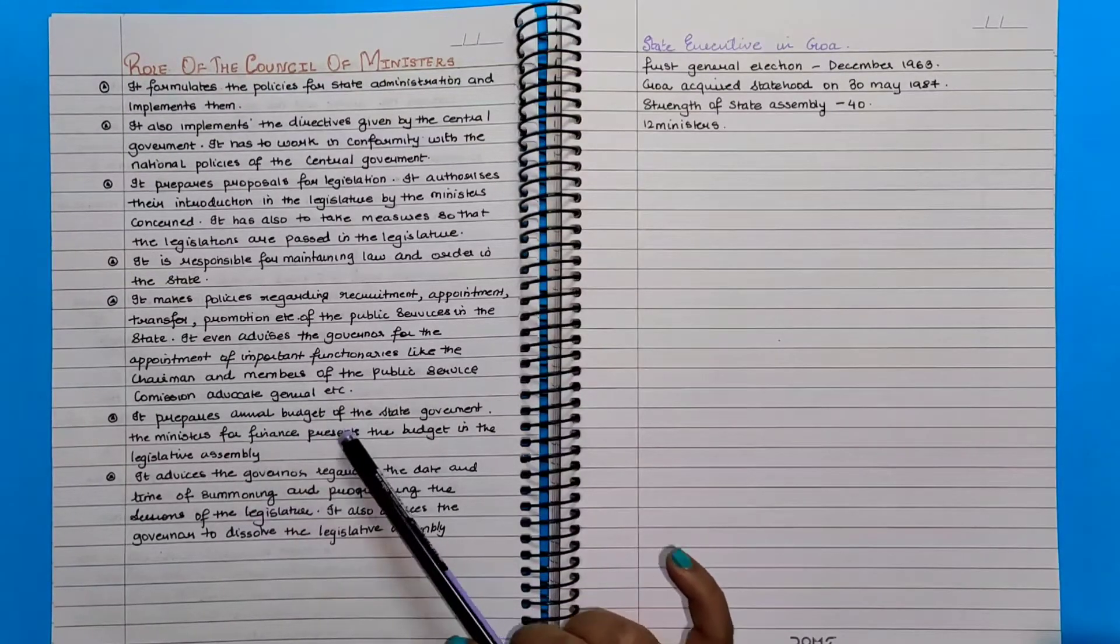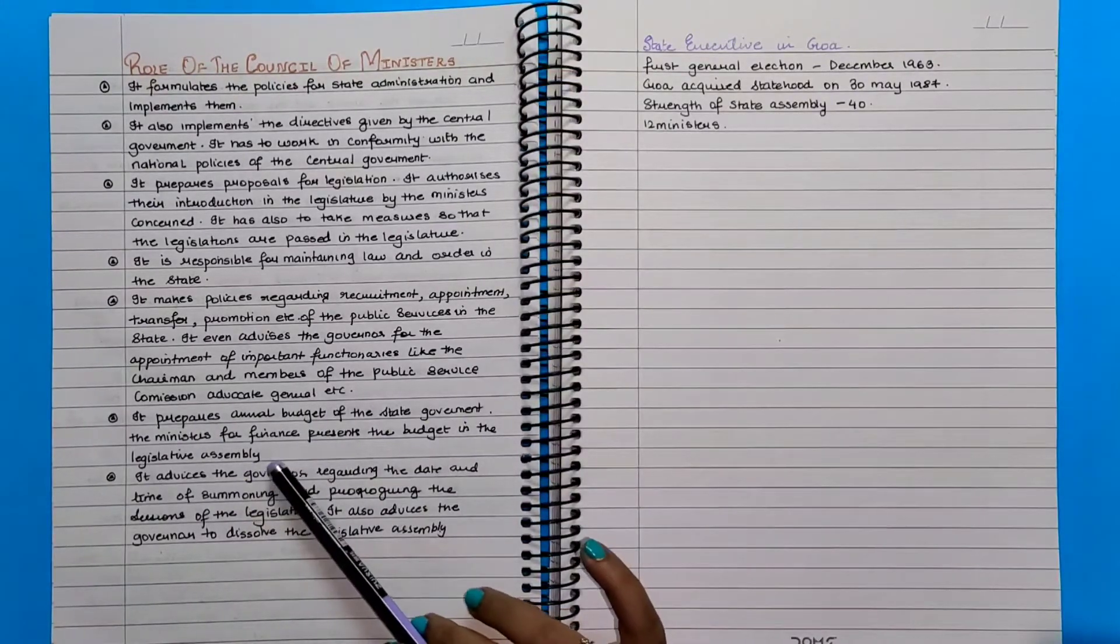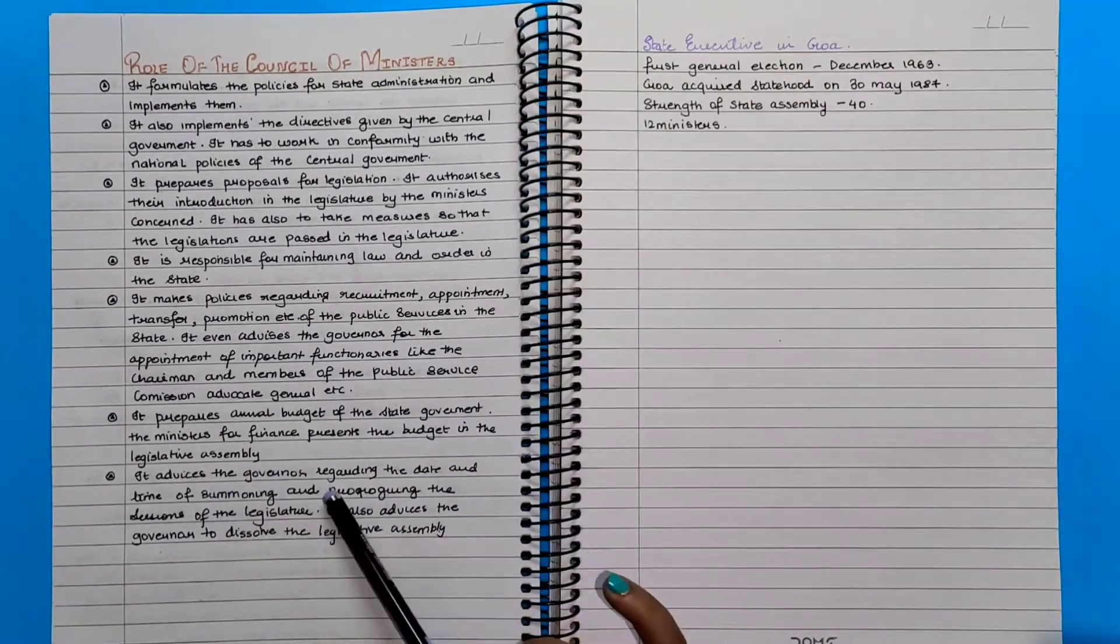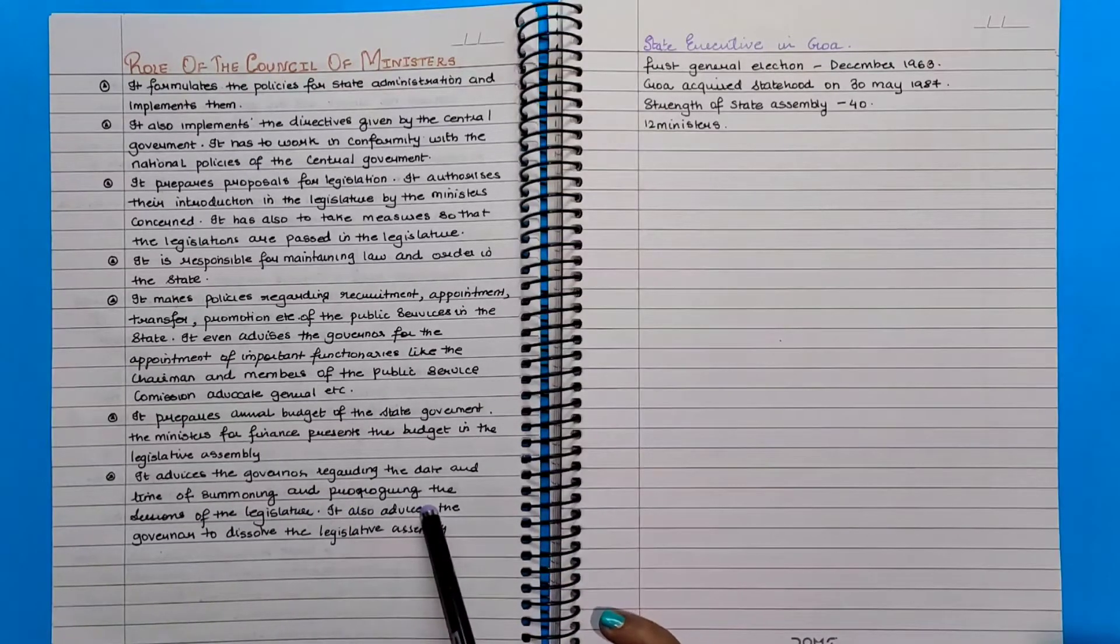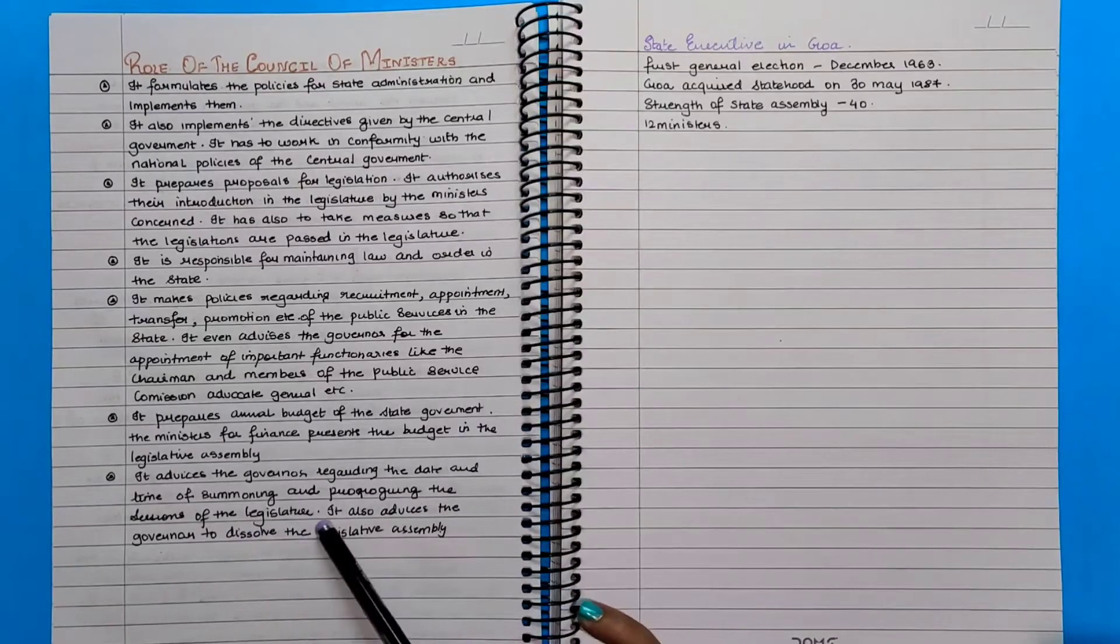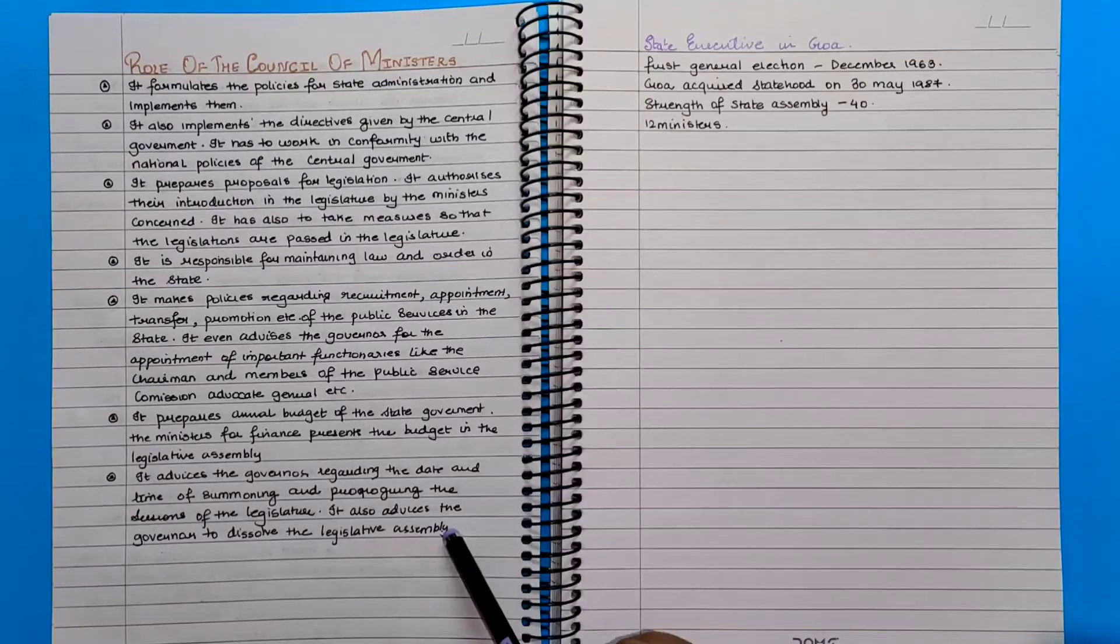It prepares annual budget of the state government. The minister for finance presents the budget in the legislative assembly. It advises the governor regarding the date and time of the summoning and proroguing the session of the legislature. It also advises the governor to dissolve the legislative assembly.